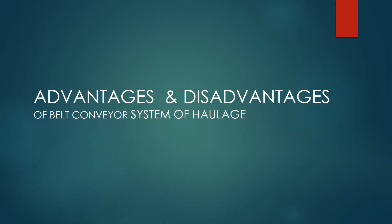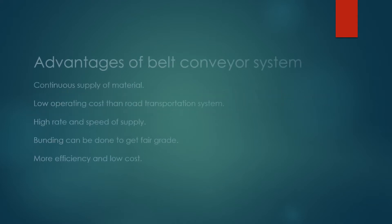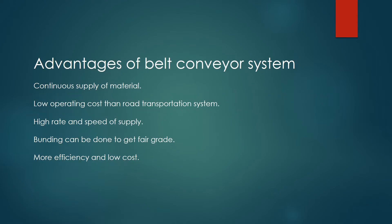Advantages and Disadvantages of Belt Conveyor System of haulage. Advantages: continuous supply of material, low operating cost than road transportation system, high rate and speed of supply, blending can be done to get fair grade, more efficiency and low cost.